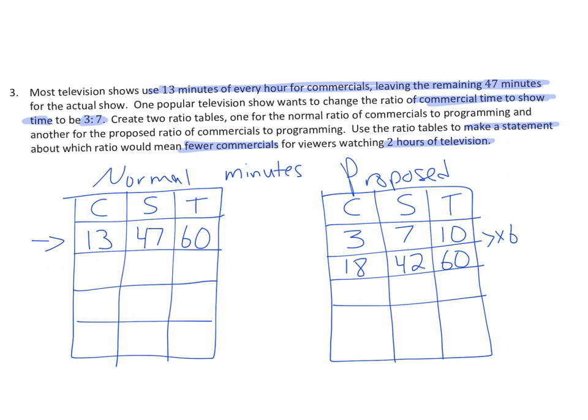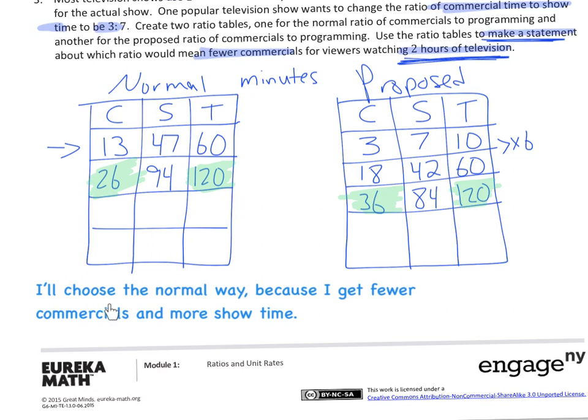So now I want to make sure I answer the question appropriately, which is, which one, I'm going to make a statement on which one has fewer commercials for 2 hours. So let's go ahead and find those numbers. 2 hours is 120 minutes. So everything times 2. So that's 36 minutes of commercials. That's 84 minutes of show. This would be 26 minutes of commercials. And this would be 94 minutes of show. So I would say I would definitely choose this show the normal way because I only get 26 minutes of commercial. And I get 94 minutes of show time in 2 hours. This one only gets me 36 minutes of commercial, but only 84 minutes of the actual show in 120 minutes or 2 hours. So my statement could read, I'll choose the normal way because I get fewer commercials and more show time. And then I highlighted it to show my work that 26 minutes is less than 36. Everything's labeled. Everything's clear and obvious. So this should get me an A.